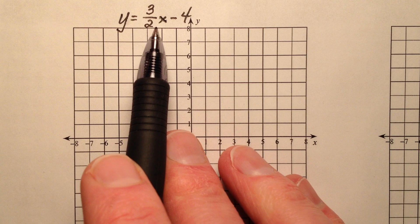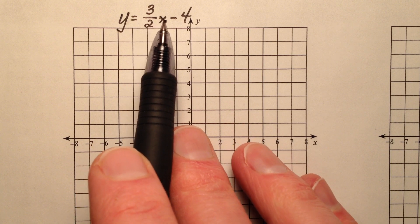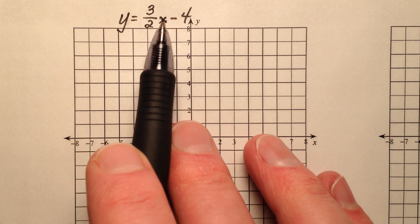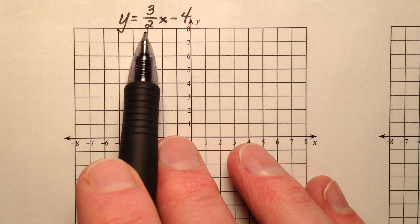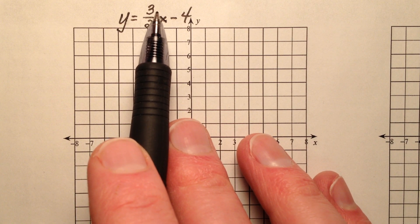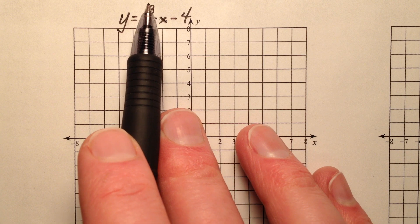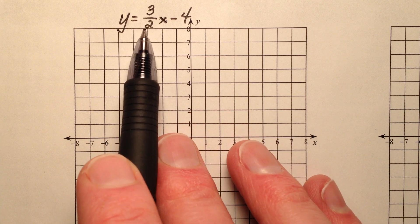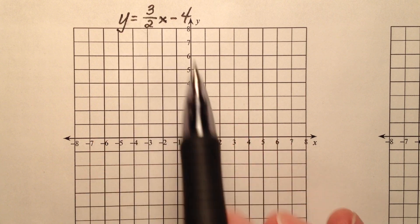The slope that we're going to use is going to be the coefficient of x, so it's 3 halves, or 3 over 2, which means if you're talking about slope as rise over run, it's going to be up 3 and over to the right 2, and both of these are positive.